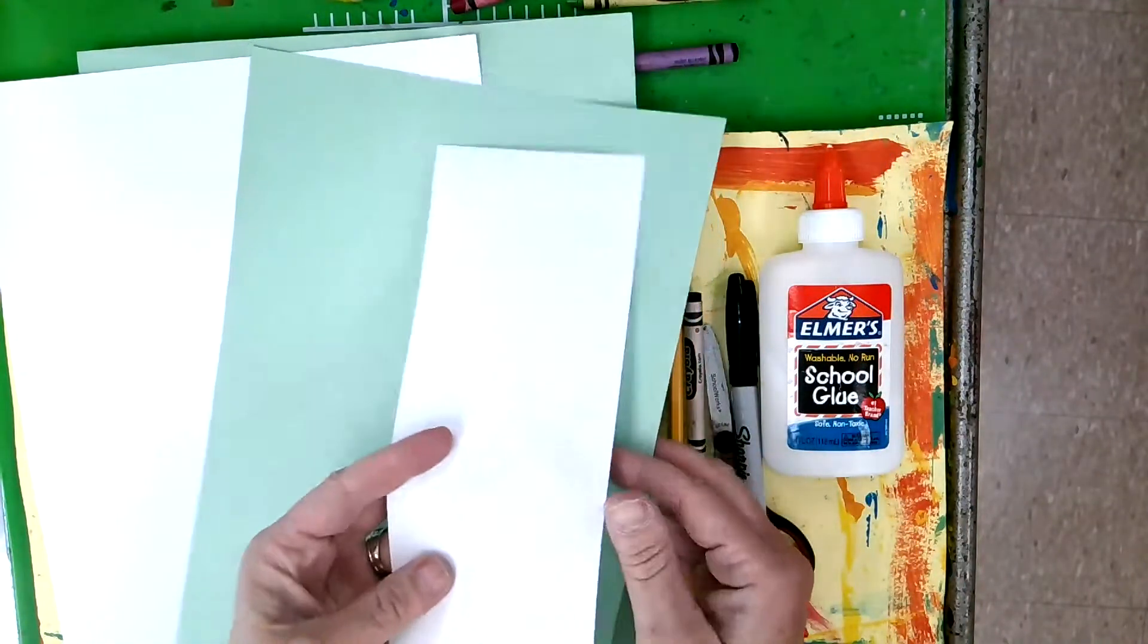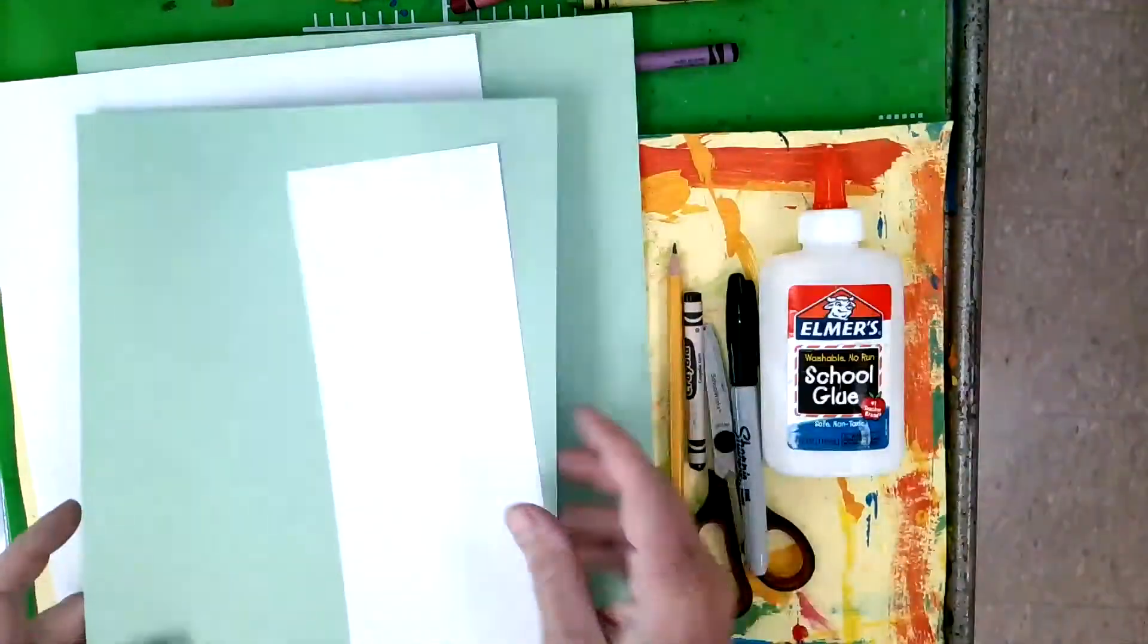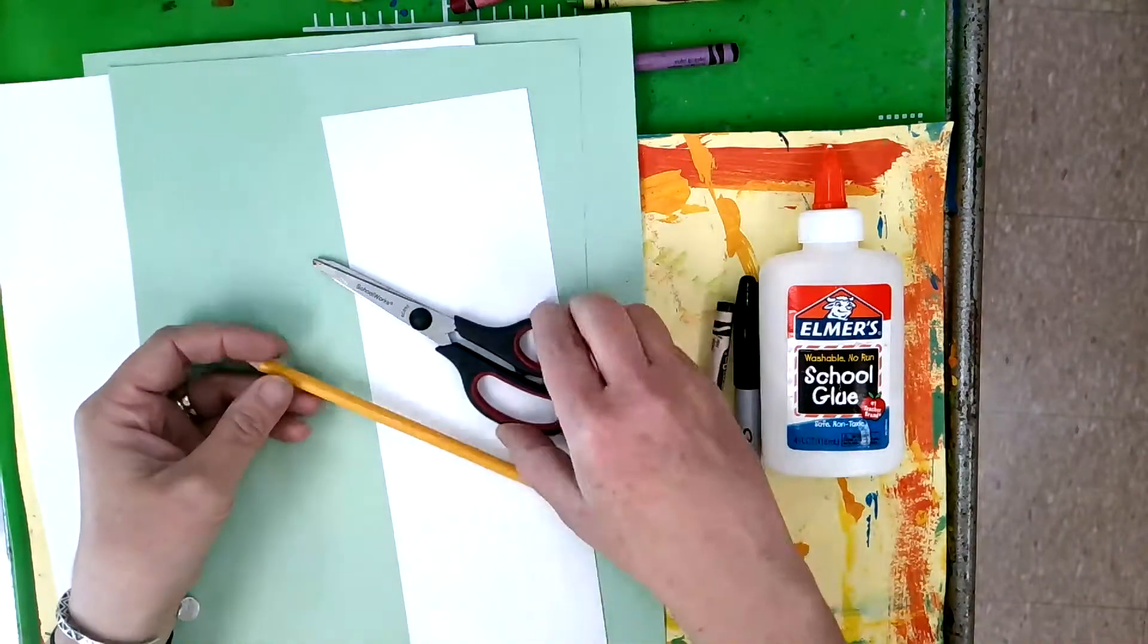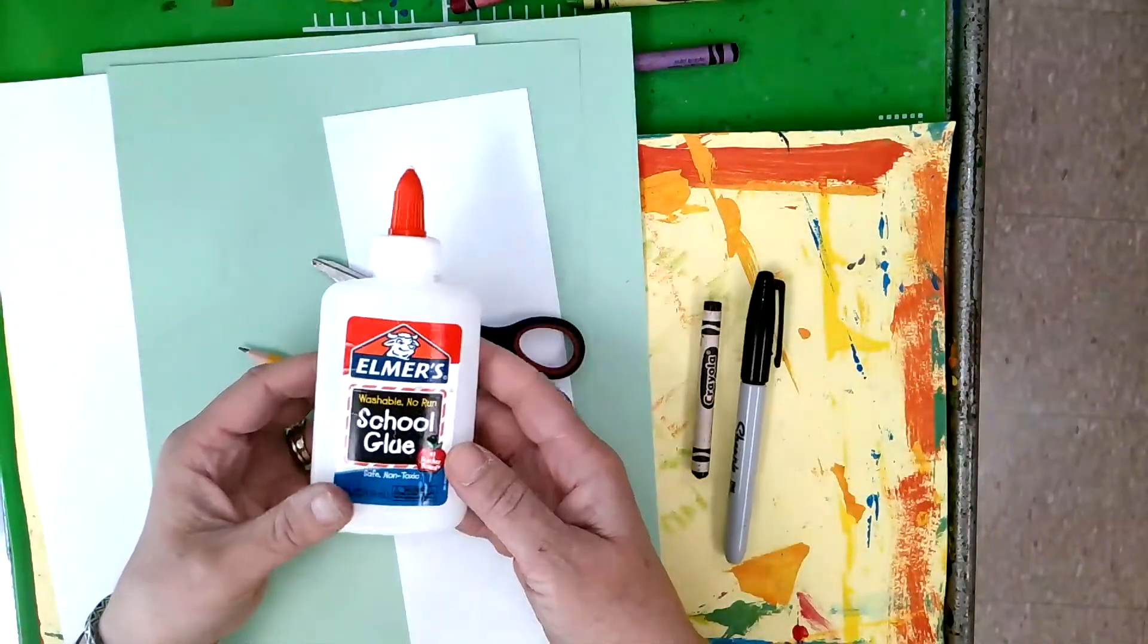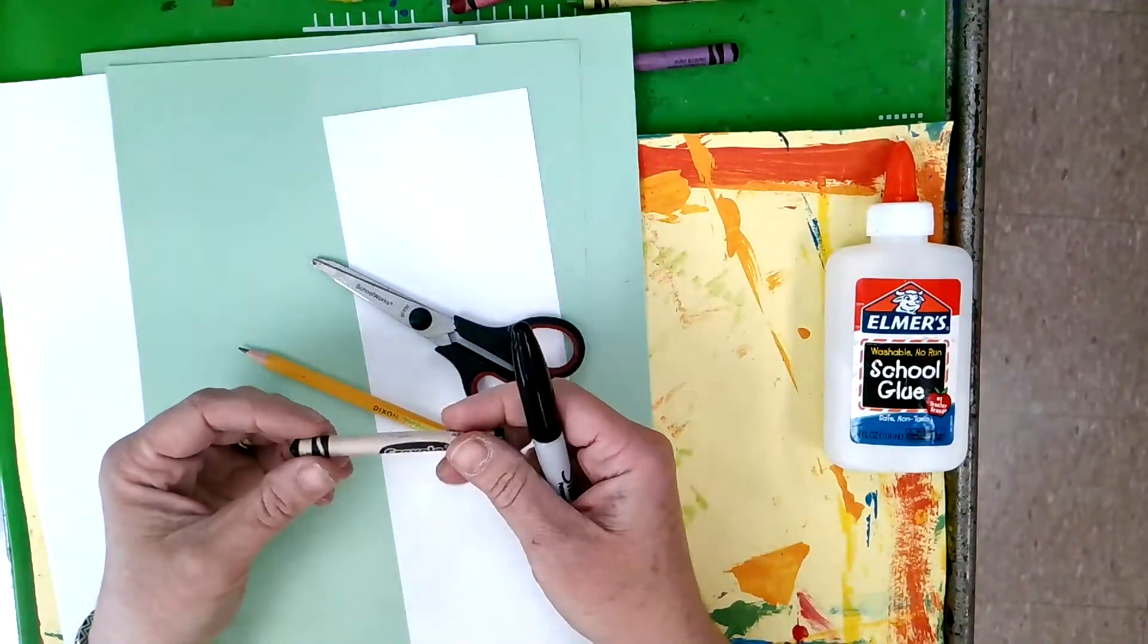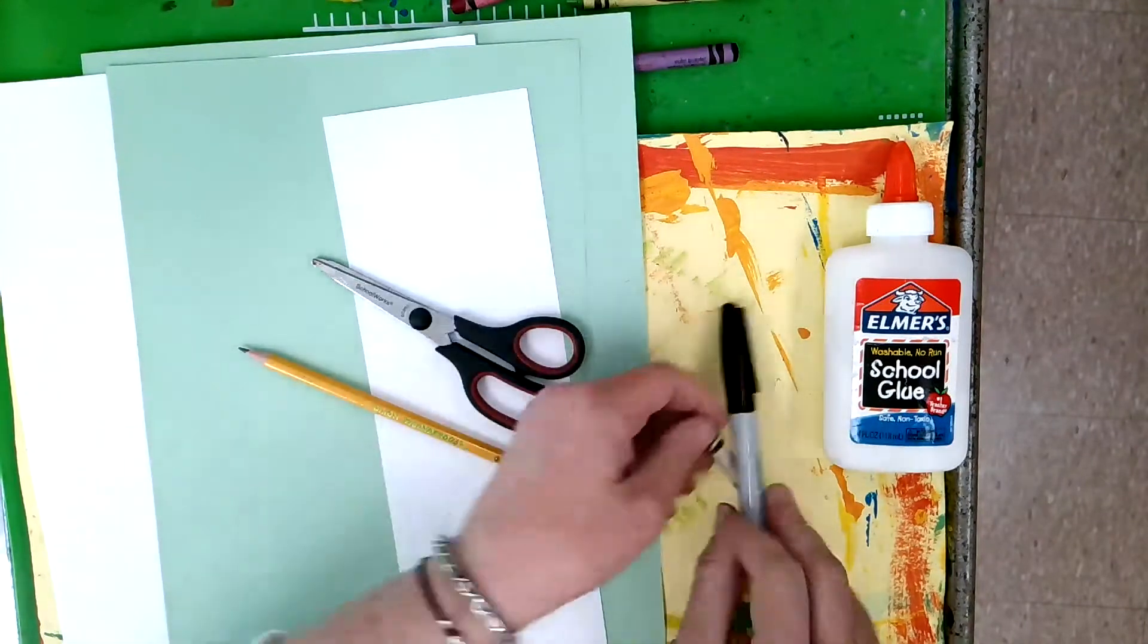Some additional white scrap paper, and let's see what else we're going to need: a pencil, some scissors, some glue, a glue stick will work or Elmer's school glue either one, and then you'll need a black crayon or a black marker.